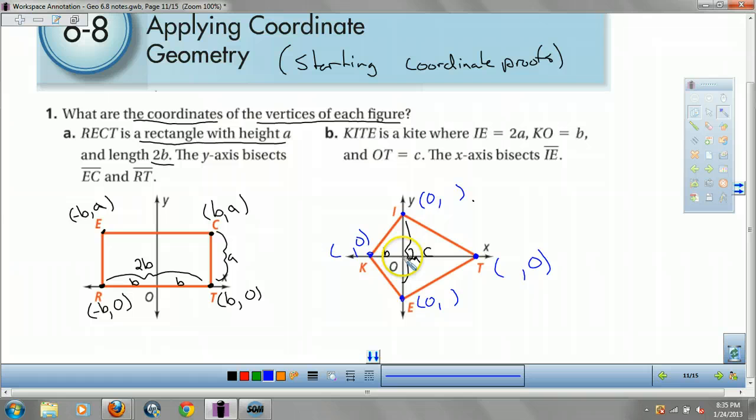Now for t, we went over c units to the right, so my x-coordinate is c. For y, well this is 2a and this is a and this is a because in the kite your diagonals are bisected. So that means we went up a. For k, we went to the left b units from the origin, so that's not just b but negative b. And for this one we went negative a because we went a down. Okay, so that's part one.